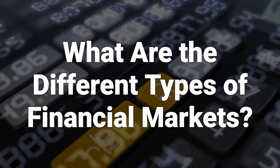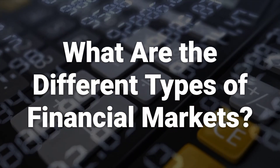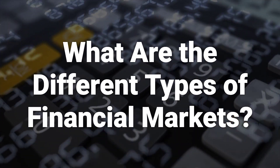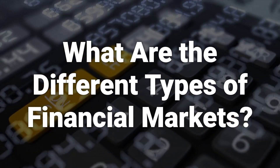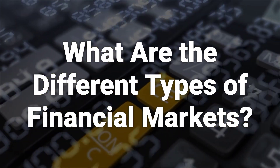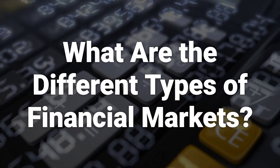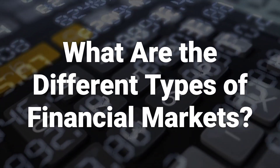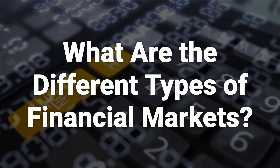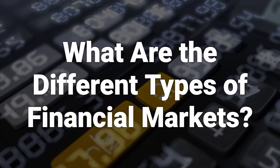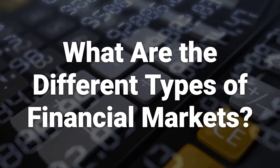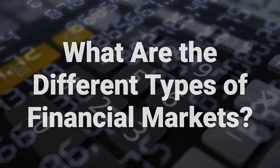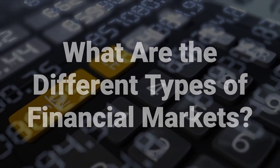Financial markets include the stock market, bond market, forex, commodities, and real estate market. They can also be broken down into capital markets, money markets, primary vs. secondary markets, and listed vs. OTC markets.